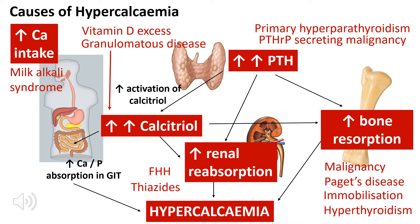You can also get hypercalcemia from increased calcium intake — called milk alkali syndrome. This could be from excessive dietary calcium or calcium tablets prescribed for osteoporosis or as a phosphate binder in chronic kidney disease, taken in excess.